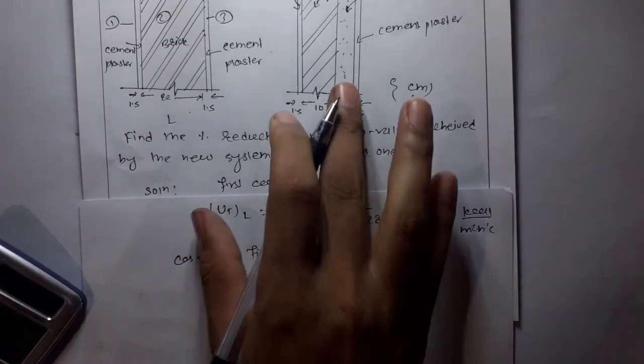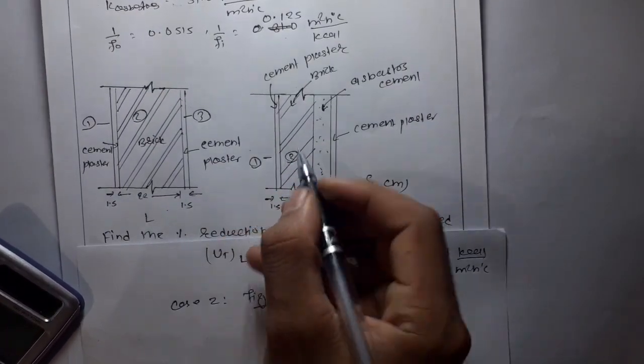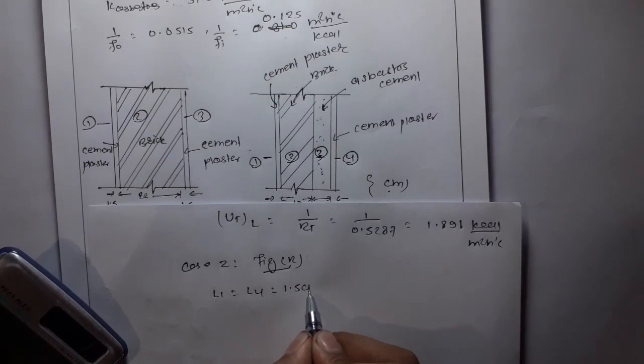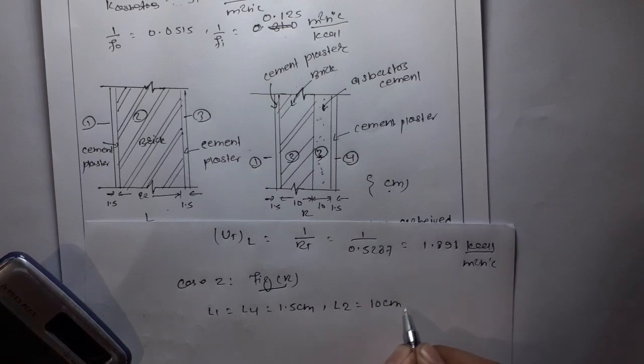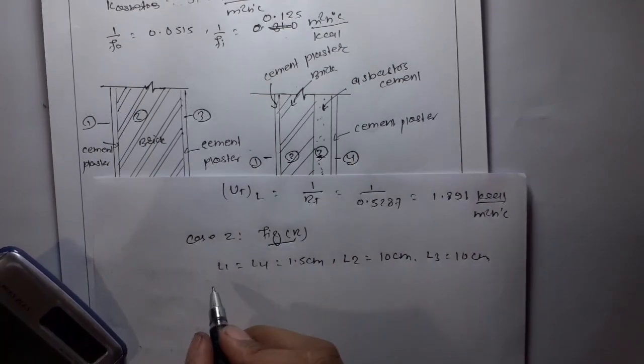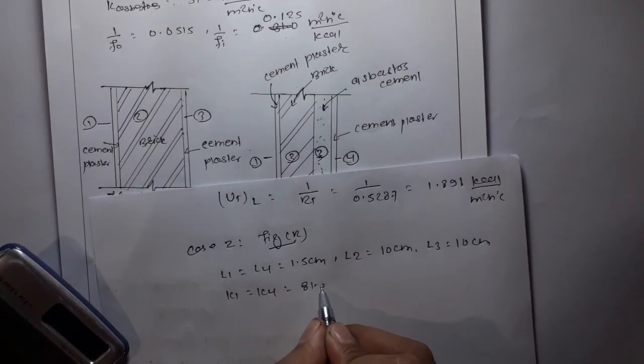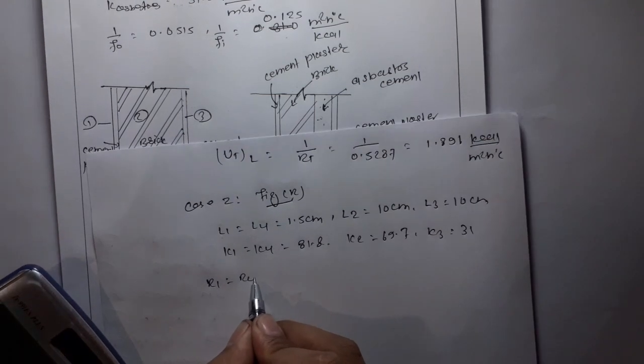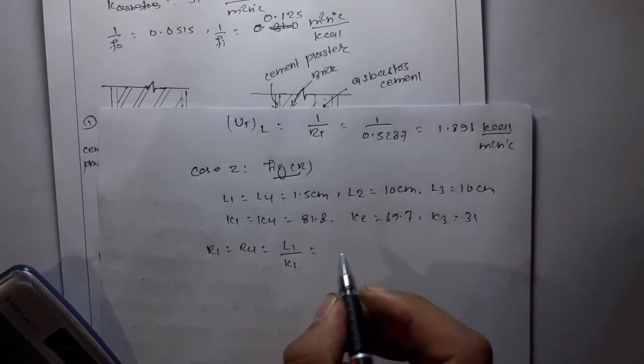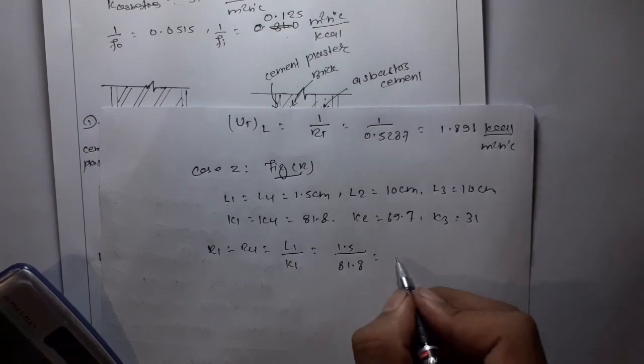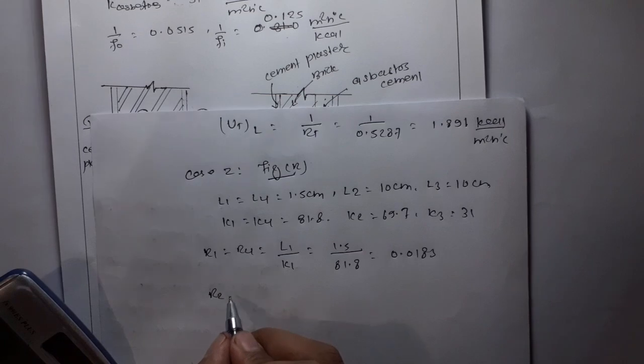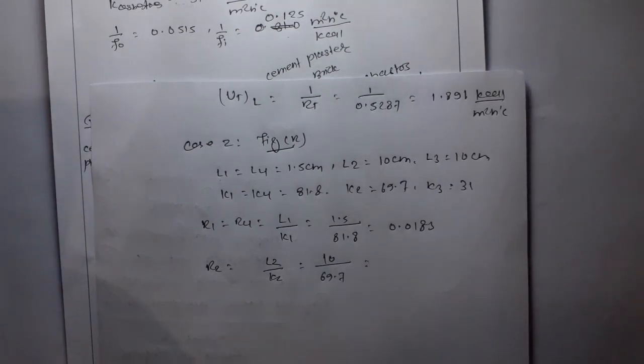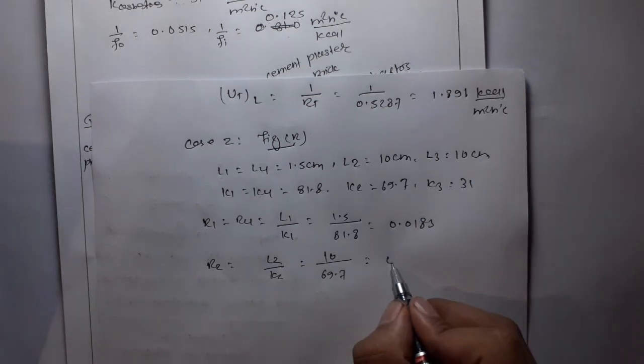For the new system with asbestos: L1 and L4 are plaster at 1.5 cm each, L2 is 10 cm, L3 is asbestos. K1 equals K4 equals 81.8, K2 is brick at 69.7, K3 is asbestos at 31. R1 equals R4, L1 upon K1, 1.5 divided by 81.8 equals 0.0183. R2 is L2 upon K2, 10 divided by 69.7 equals 0.14347.